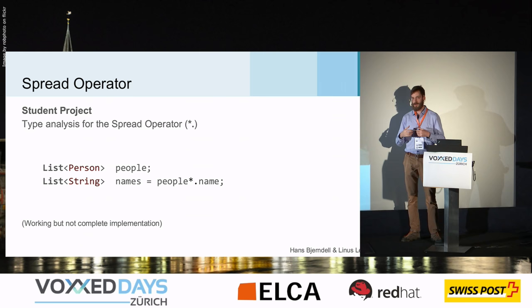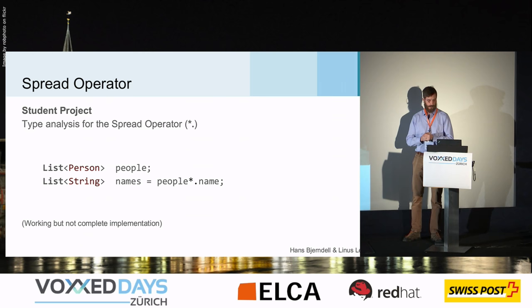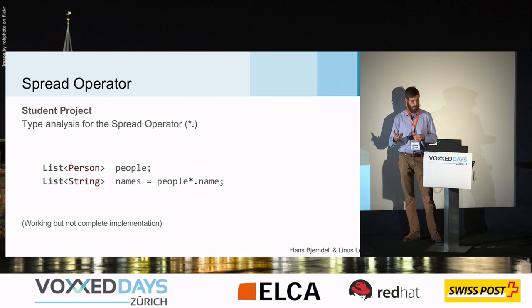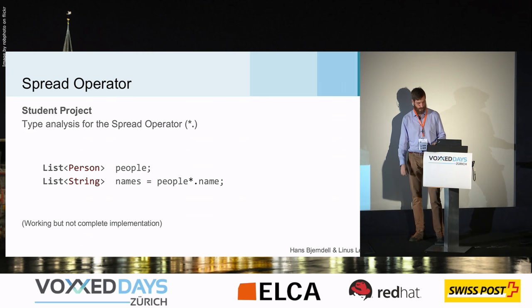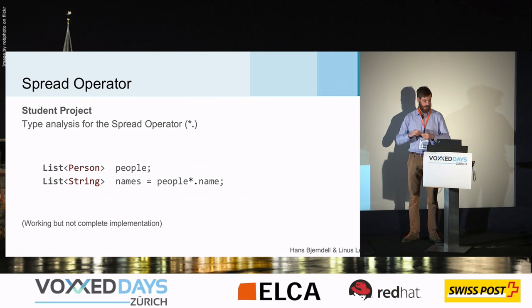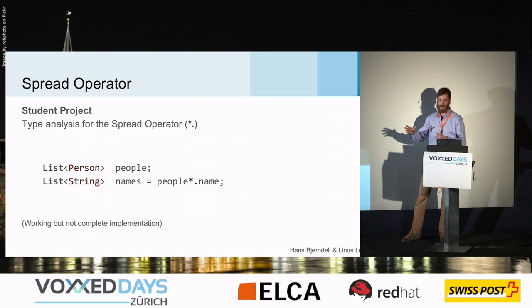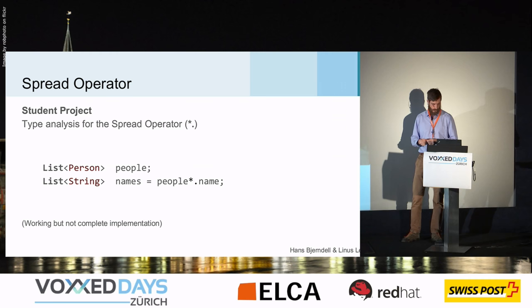Another extension by a student group had a more ambitious project: they wanted to add the spread operator to Java. The spread operator is in, for example, Groovy. It's very useful for collecting, say, the names of all people if you have a collection of people. You can use the spread operator to collect members of objects or call some method on a collection of objects. This project was quite ambitious and they didn't get so far, but you can see the code I'm showing has a new operator. They had to add new parsing to the compiler to support this, and they added static analysis.